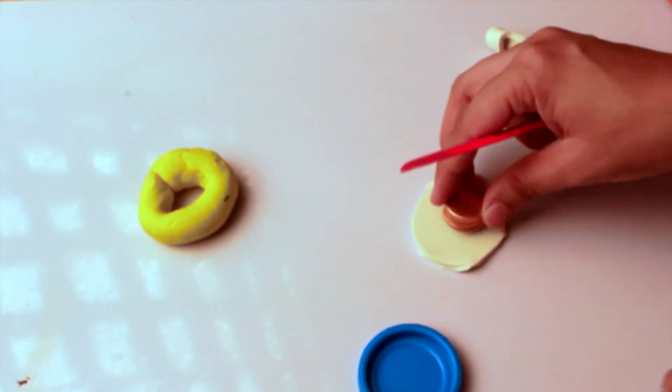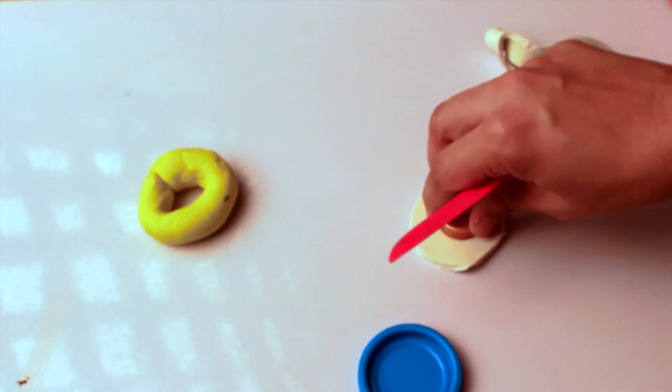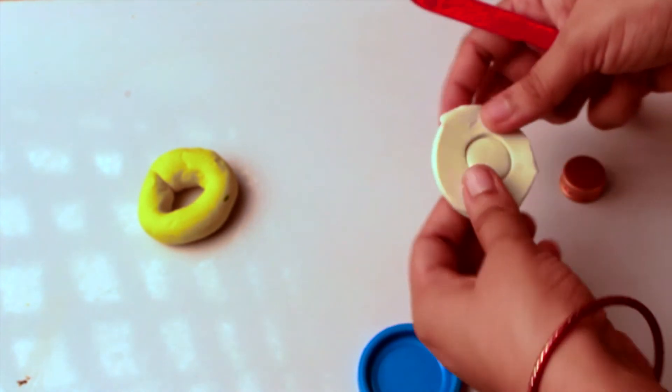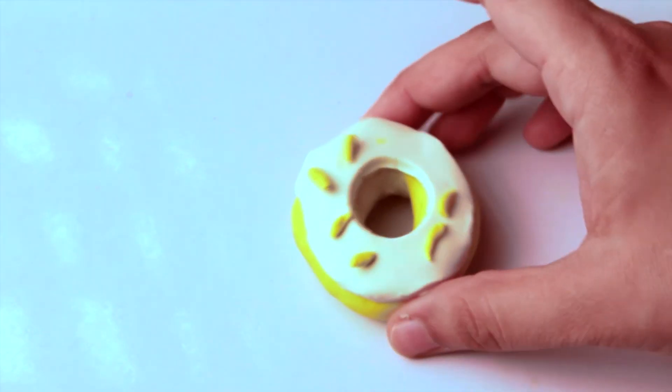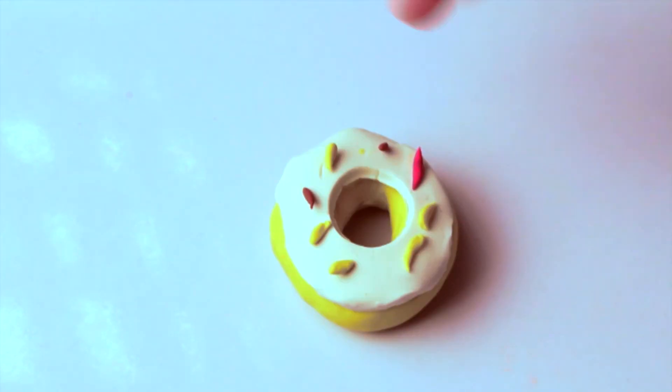And here you go! Now you can place this white creamy Play-Doh on top of your doughnut. You can just add some sprinkles with your little Play-Doh on top of this doughnut.